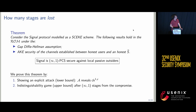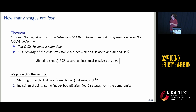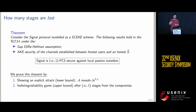For each protocol we can give a theorem. For Signal, we describe it as a CK protocol and, under some assumptions in the ROM model, give a metric for a given adversary. For a local passive outsider adversary, we get infinity-1 PCS for Signal. We use a two-step approach: first give an attack, which gives a lower bound on the metric, and then show via a security proof using a distinguishability game that security is recovered after a certain number of messages or stages.